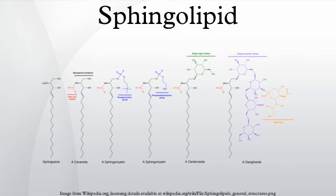Regarding structure, the long chain bases, sometimes simply known as sphingoid bases, are the first non-transient products of de novo sphingolipid synthesis in both yeast and mammals. These compounds, specifically known as phytosphingosine and dihydrosphingosine, are mainly C18 compounds, with somewhat lower levels of C20 bases. Ceramides and glycosphingolipids are N-acyl derivatives of these compounds.